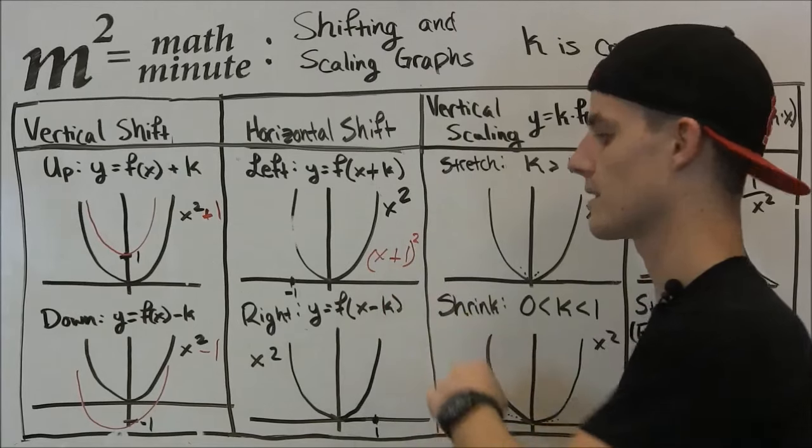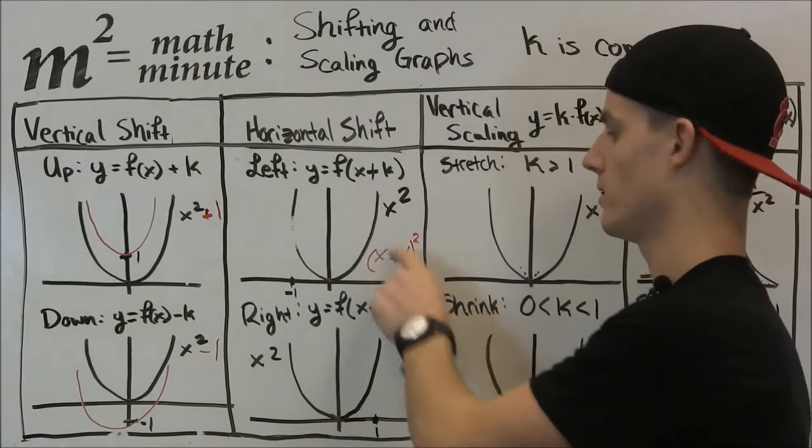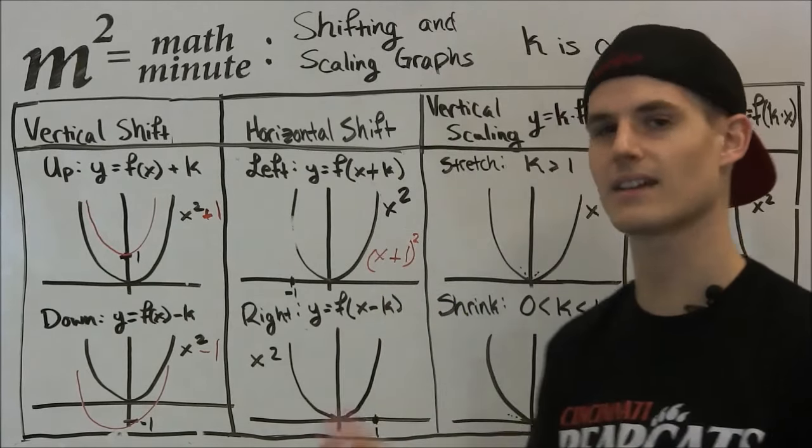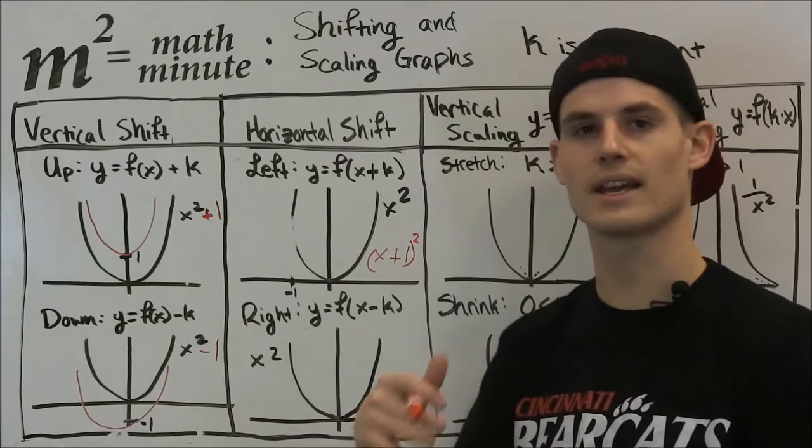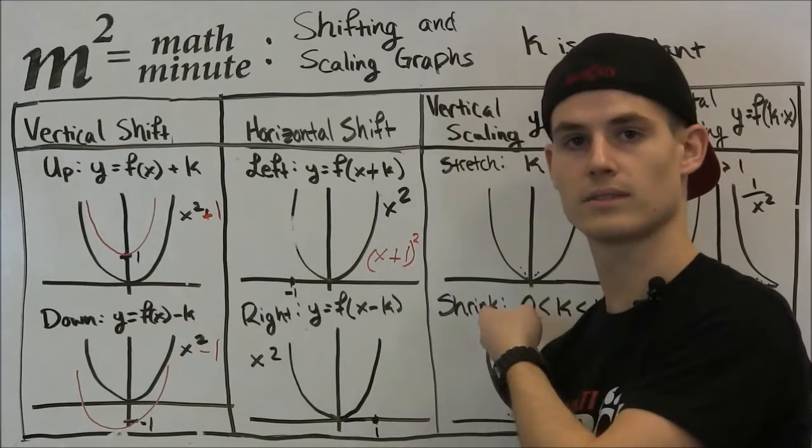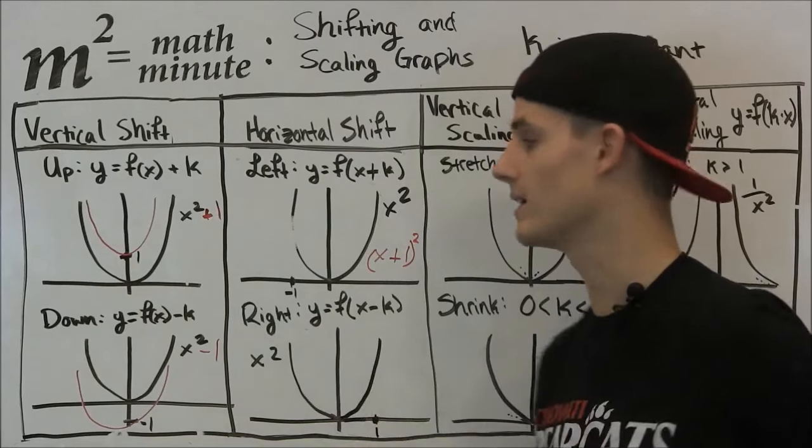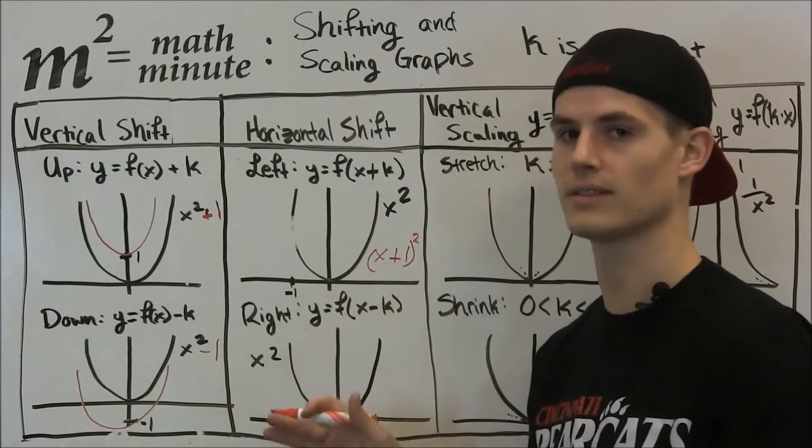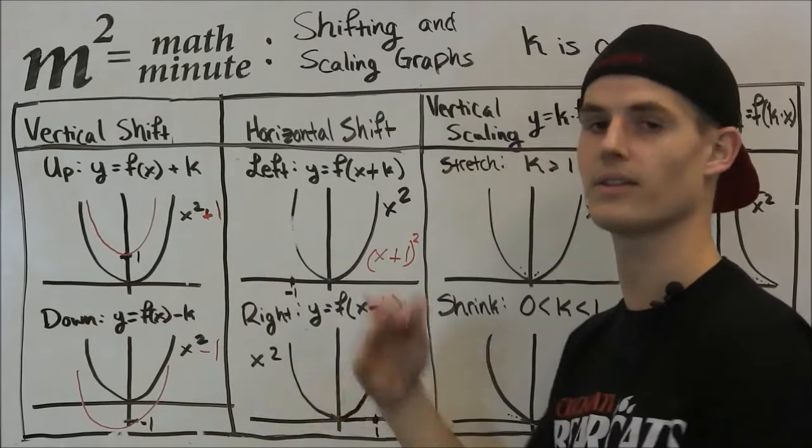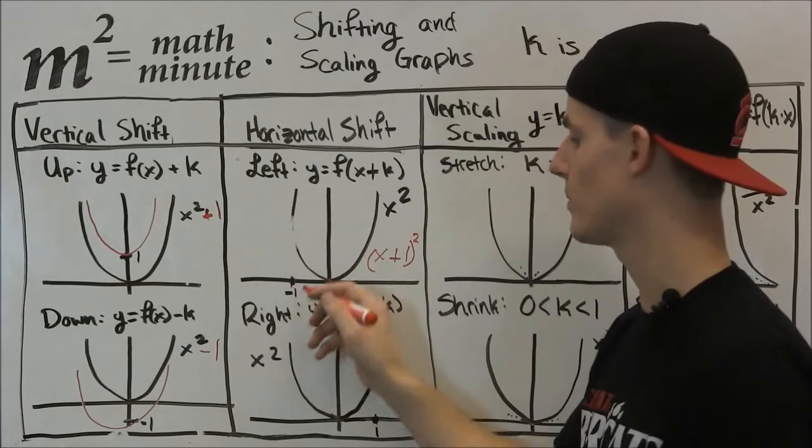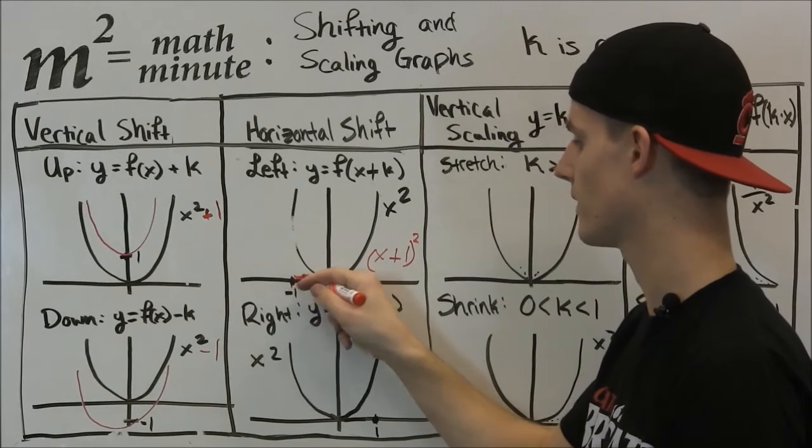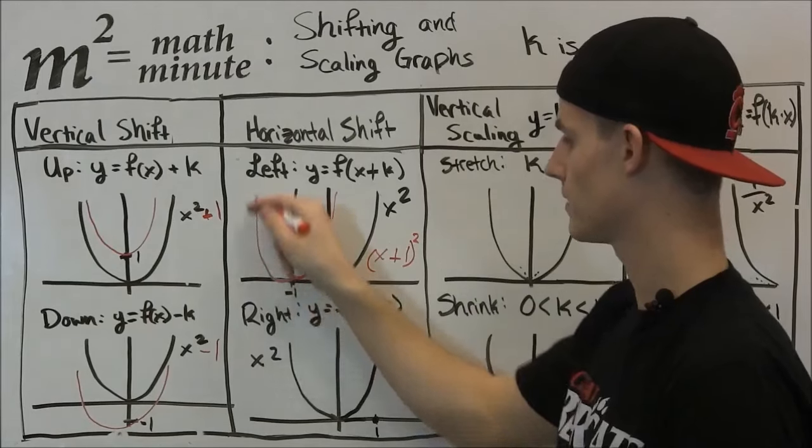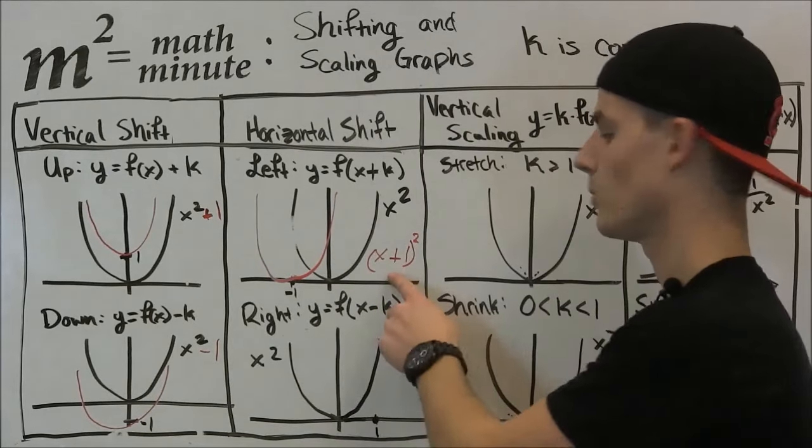So what this does is this is going to shift it left one unit. And this is when we add. This is kind of confusing. Sometimes you want to say we're adding, we're going to go to the right when we go down x values. But actually, with a horizontal shift, we shift left if we add on the inside of a function. So as you can imagine, it's going to be the same graph, just shifted to the left one unit.